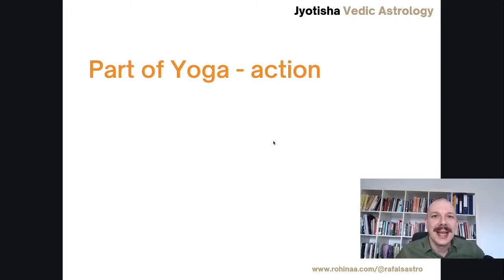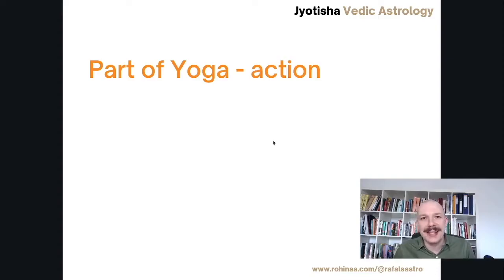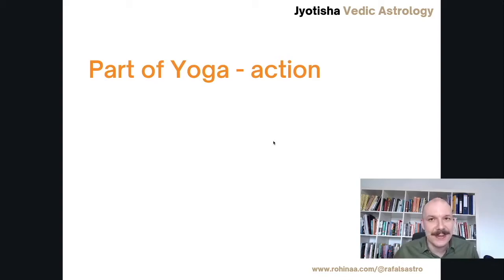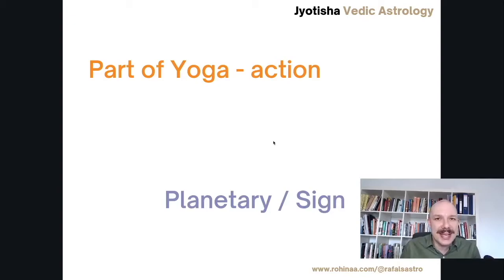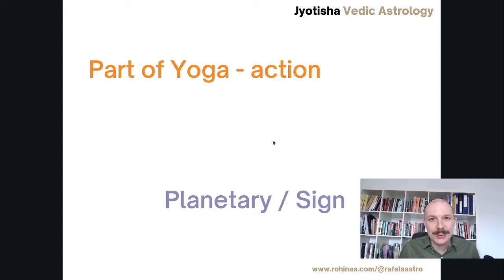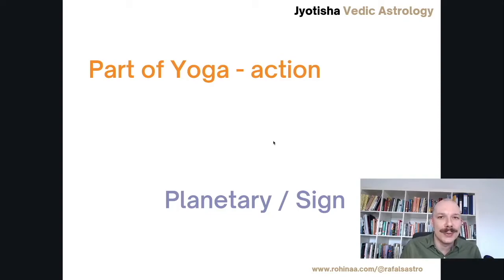First thing is that aspects are part of the yoga. Why we are studying the aspects? Because they are part of the yoga. Yoga means relationship between two planets, and this is like a chemistry. When the planets have relationship with each other, they create some action, which is then deciphered by astrologers. We have two types of aspects: Graha Drishti, the planetary aspect, and Rasi Drishti, which is when the relationship between two planets is based on the signs.